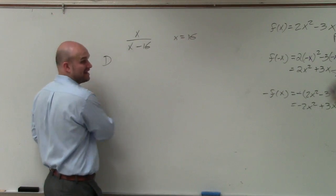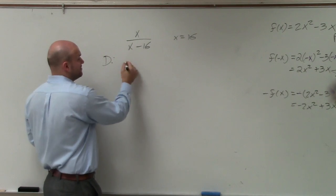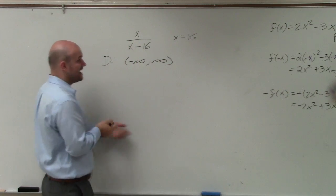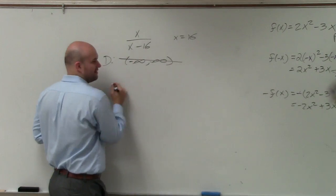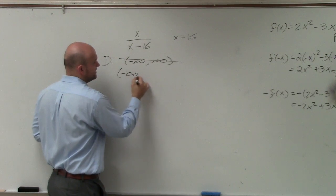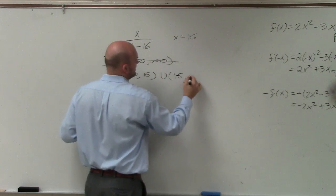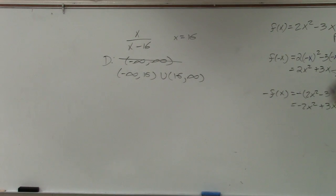If we were going to talk about writing the domain, which we're going to get to, so we might as well just practice it, it's going to be all real numbers except x cannot equal 16. So what we would do is not going to write it like this. We're going to say negative infinity to 16 union 16 to infinity. You didn't have to write the domain, but we're going to be doing a lot of domains in this class, so we might as well get used to it.